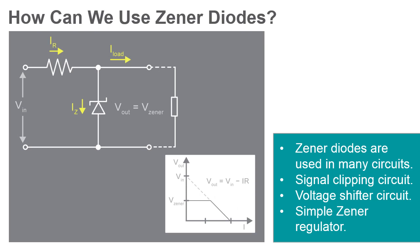Finally, a voltage regulator. Zener diodes can be used in a circuit to regulate the voltage applied to a load. A common configuration is the simple Zener regulator. This is a shunt regulator and operates using the Zener diode's action of maintaining a constant voltage drop when the current is sufficient to cause Zener breakdown. This regulator is often used in low current applications as either a voltage reference or a voltage source.